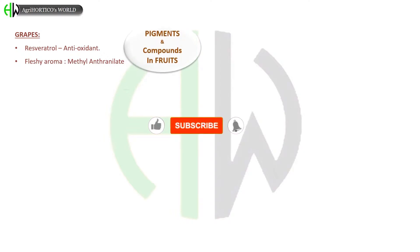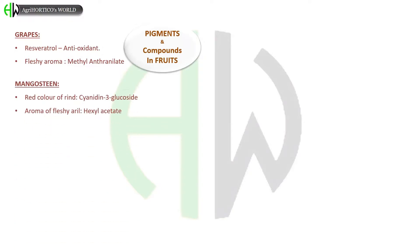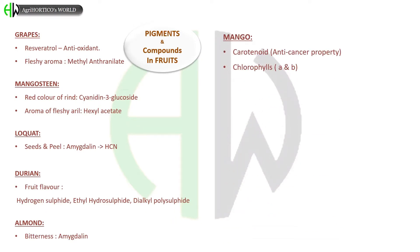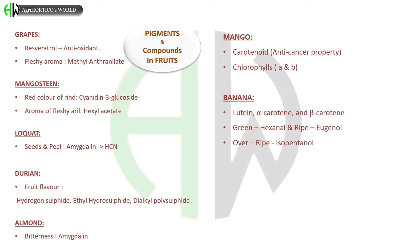Now let us know about the pigments and compounds present in fruit. In grapes, resveratrol is an antioxidant and fleshy aroma is due to the presence of methyl anthranilate. In mangosteen, red color of rind is due to cyanidin-3-glucoside. Aroma of fleshy aril is due to the presence of hexyl acetate. Lychee seeds and peel contain amygdalin, which further converts to HCN. In durian, the fruit flavor is due to the presence of hydrogen sulfide, ethyl hydrosulfide and alkyl polysulfides. Bitterness in almond is due to the presence of amygdalin. In mango, carotenoid is present which has anti-cancer property, and also chlorophylls A and B are present. In banana, lutein, alpha-carotene and beta-carotene are present. Green or raw banana contains hexanal and ripe banana contains eugenol.